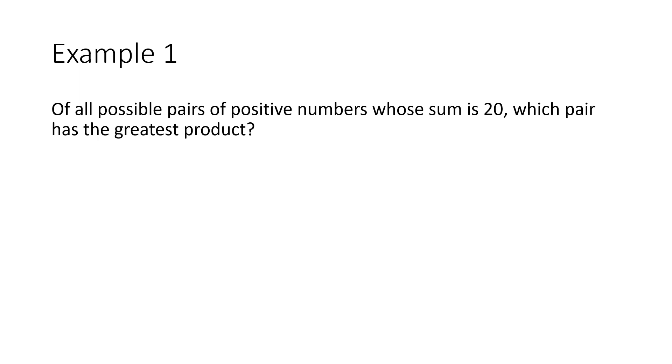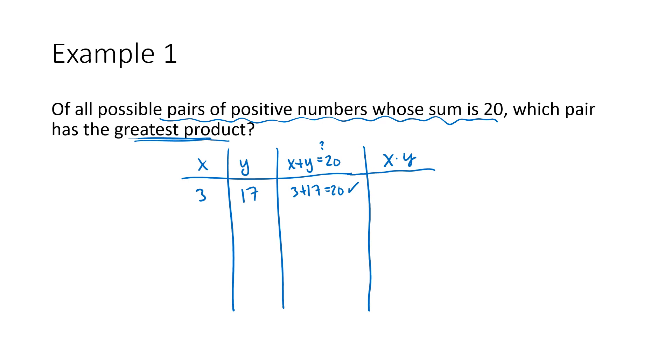Here's an example. Of all possible pairs of positive numbers whose sum is 20, which pair has the greatest product? If we're just thinking about this question, we could imagine making a list of pairs of numbers. Maybe I'll call them x and y whose sum is 20. There's lots of different ways to have numbers whose sum is 20. I could have 3 and 17, for example. We might check that x plus y equals 20. 3 plus 17, yep, that really does equal 20. So this is a pair of positive numbers whose sum is 20.